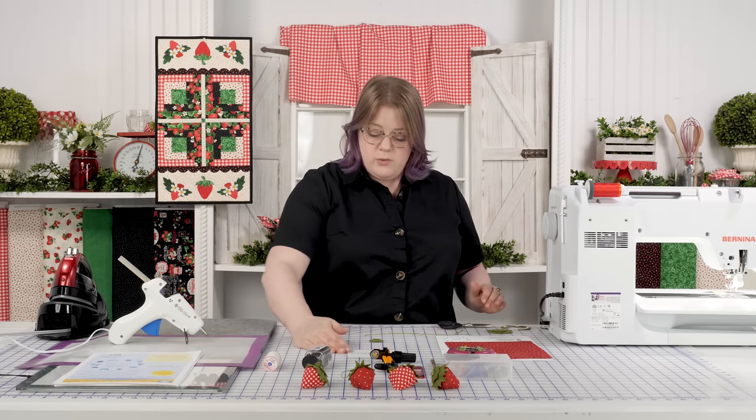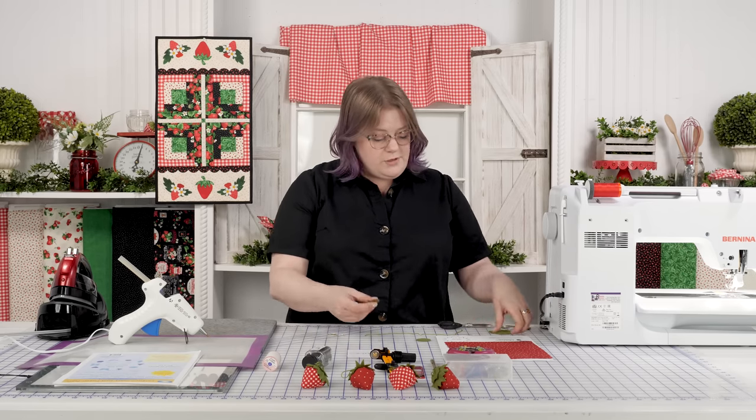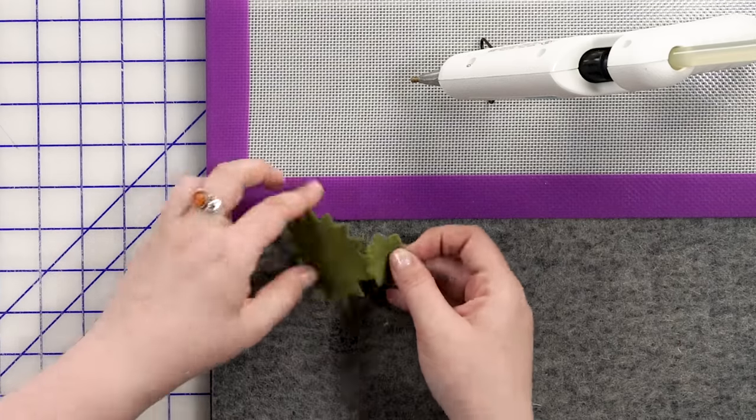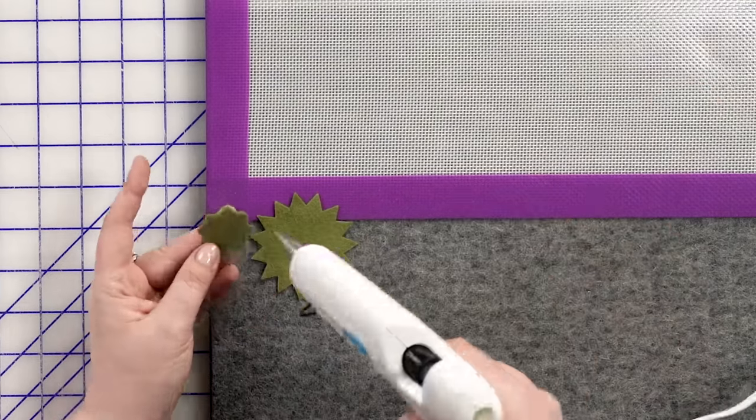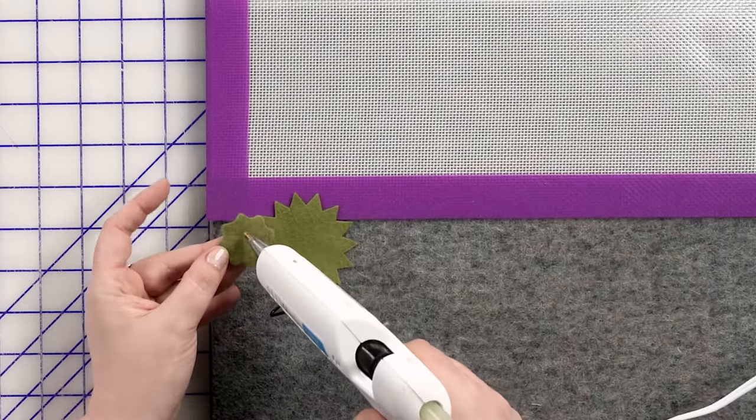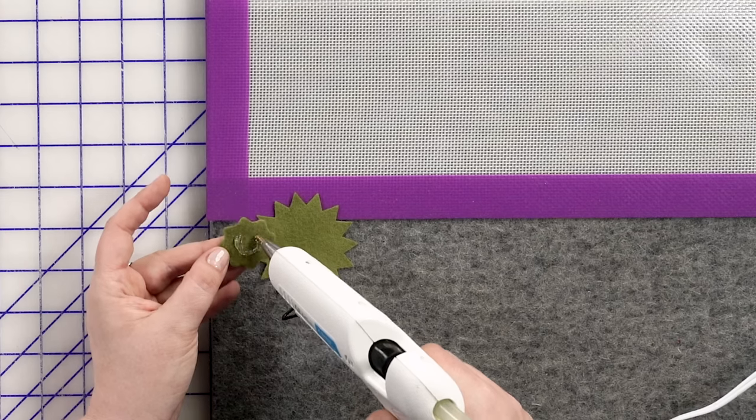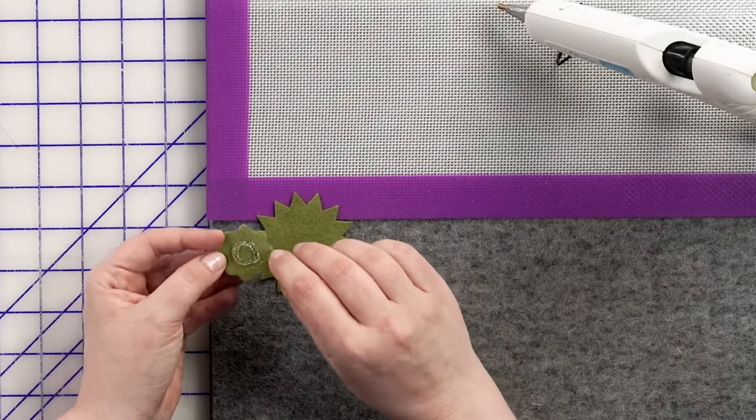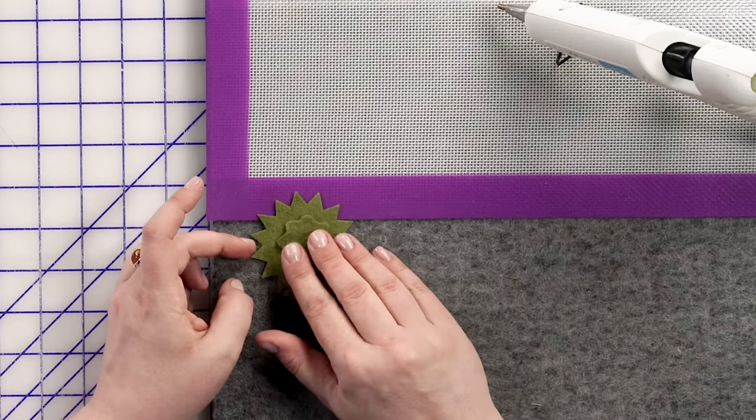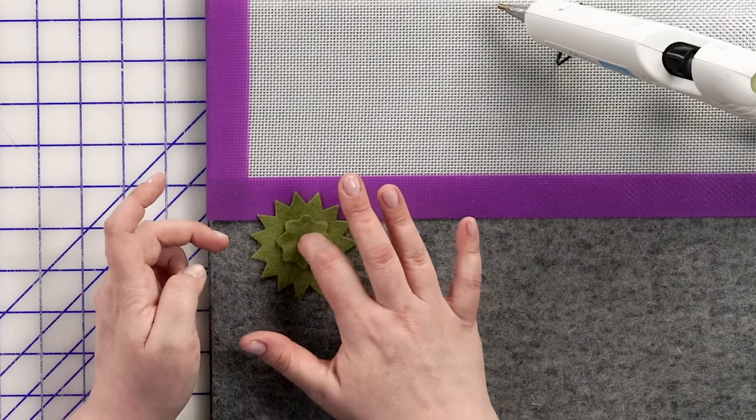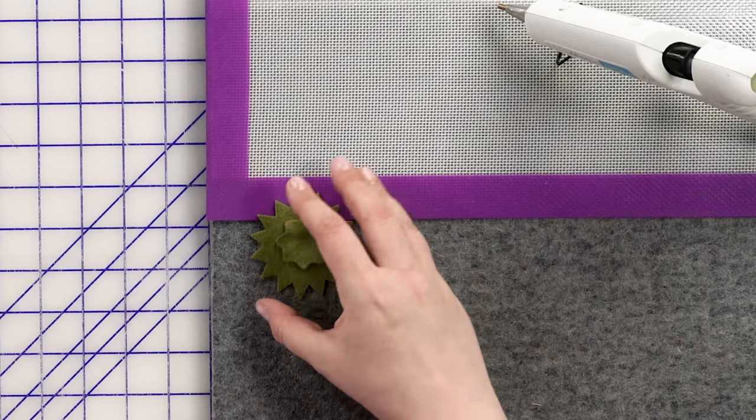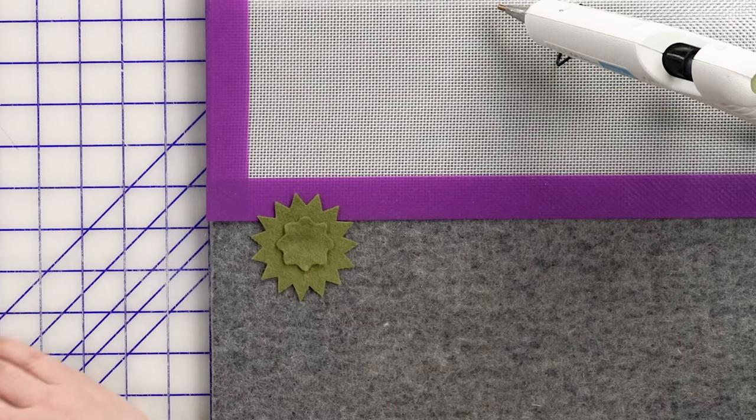We're going to start with the glue gun first, our two leaf shape here. We are going to do a little circle on the back. I do want to leave a little space in the middle that I will eventually be sewing through. And we're going to set this on here, and I try to poke that in so that that glue doesn't get in the middle, it kind of spreads outwards.